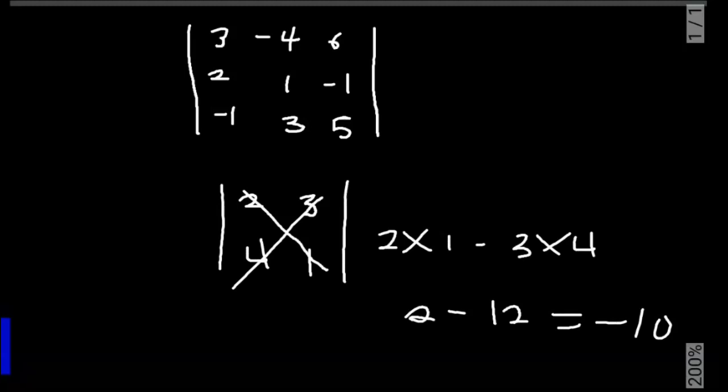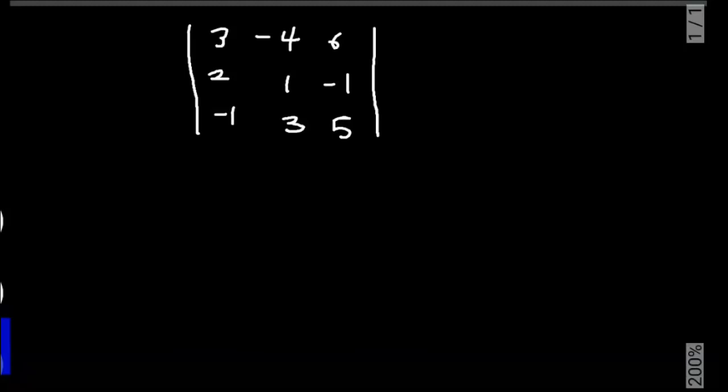We can't do the same thing for the 3 by 3 matrix. The easiest and fastest way to find the determinant of a 3 by 3 matrix is by using the Sarrus rule. To use the Sarrus rule, the first thing we are going to do is to list out all the elements in the matrix.